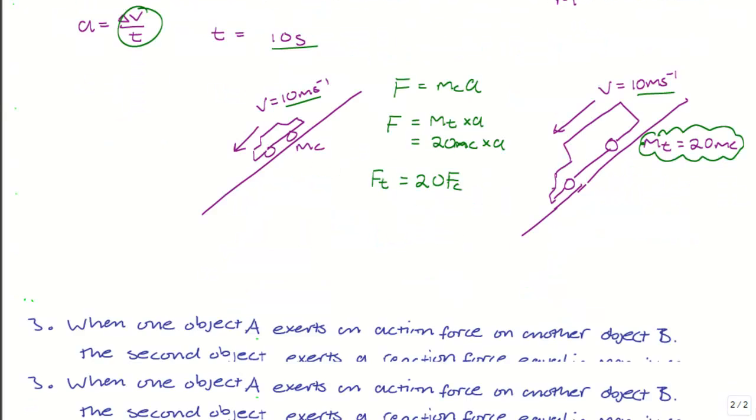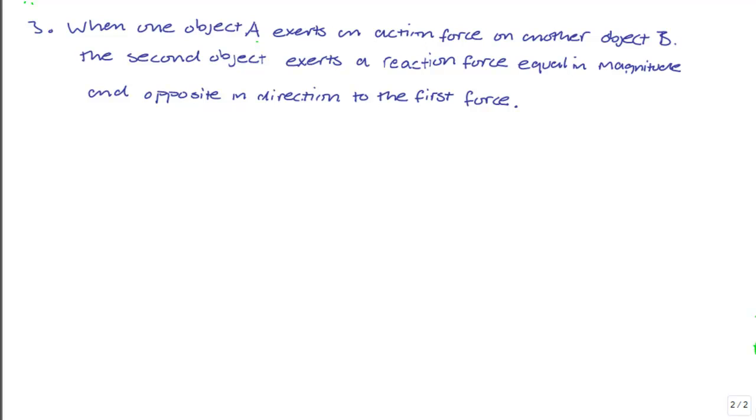Newton's third law states that when one object A exerts an action force on another object B, the second object B exerts a reaction force equal in magnitude and opposite in direction to the first force. I've underlined some key words here. If you're taking notes, do the same as well.